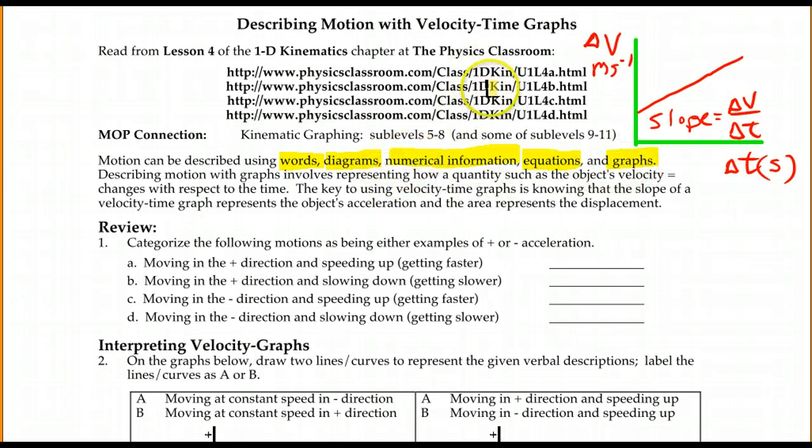Now, we are looking not at position compared to time, but velocity. And velocity is the rate at which you change your position. So it's actually a rate of another rate. And it turns out that the slope is going to be delta V, the change of velocity, divided by delta T, the change of time. That is going to be the acceleration of the object.